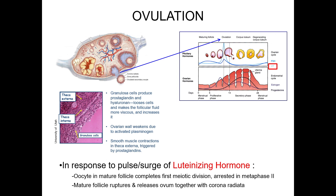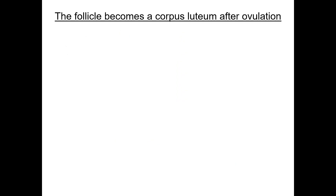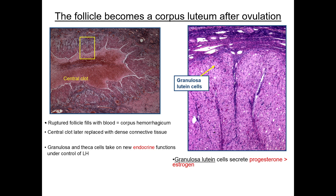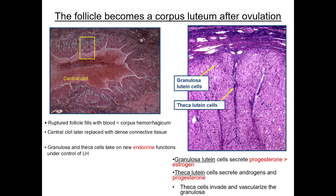The empty follicle becomes a temporary endocrine organ in the ovarian cortex called the corpus luteum, whose secretions are essential for initiation and maintenance of early pregnancy. Initially, blood from disrupted capillaries forms a large central clot, called the corpus hemorrhagicum. Under the control of luteinizing hormone, granulosa and thecal cells reorganize. The granulosa lutein cells enlarge and secrete progesterone and estrogen, predominantly progesterone, while the smaller, darker theca lutein cells invade the granulosa and also predominantly produce progesterone. Capillaries from the thecal cells will invade and vascularize the granulosa.